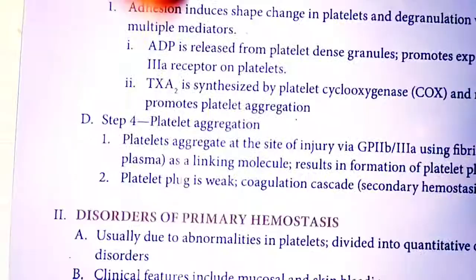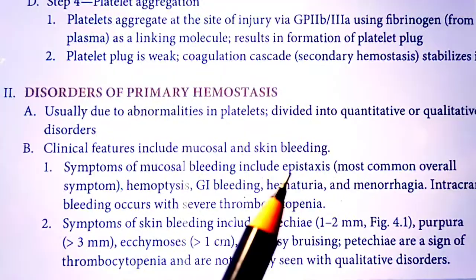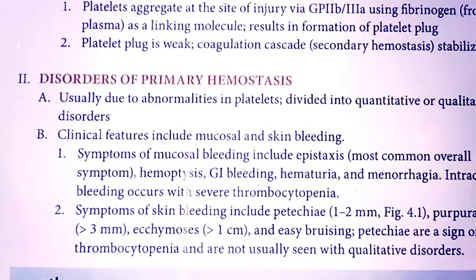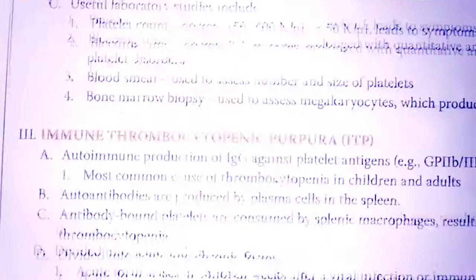Clinically, disorders of primary hemostasis present with mucosal bleeding, epistaxis (nosebleeding), hemoptysis (coughing of blood), GI bleeding, hematuria, menorrhagia, ecchymosis, easy bruising, and petechiae. All these are signs of thrombocytopenia.